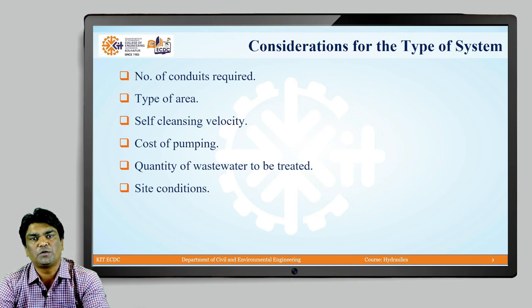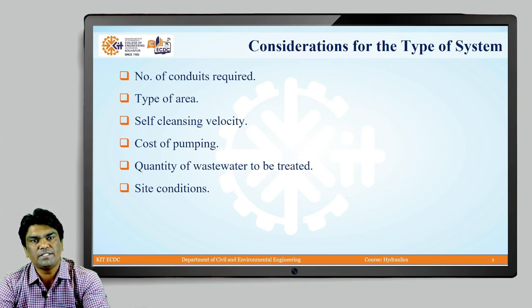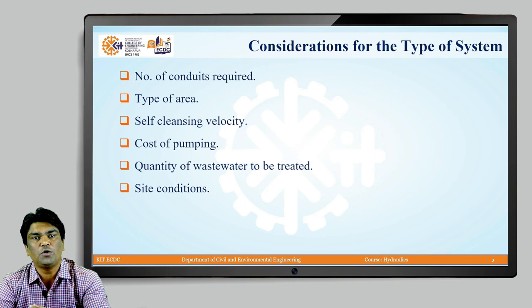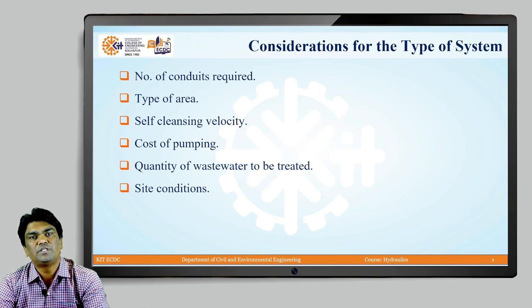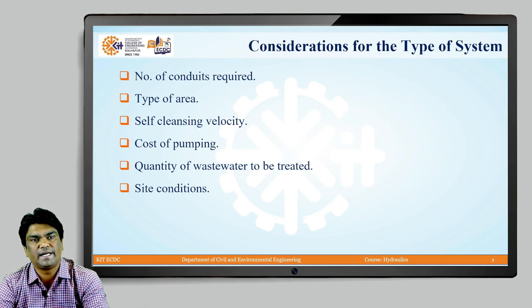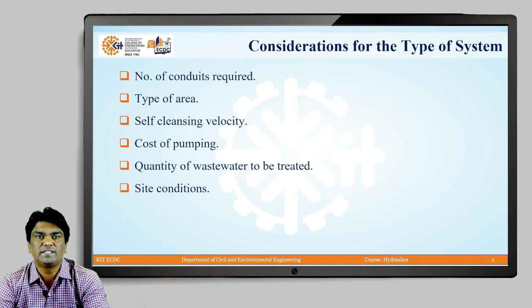The next point is quantity of waste water to be treated. In a separate system, only sanitary sewage needs to be treated, but in combined sewers, sanitary sewage and storm water are mixed, so the quantity of waste water to be treated at the sewage treatment plant is more — making the cost of treatment higher for combined sewers. The last consideration is site conditions: what is the topography and gradient of the site, which determines the appropriate type of sewage system for that area.